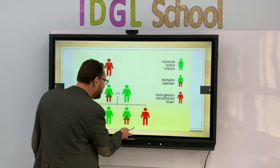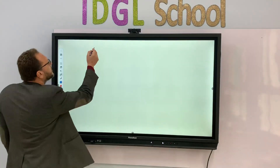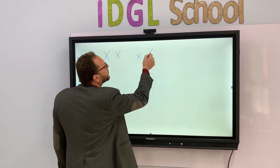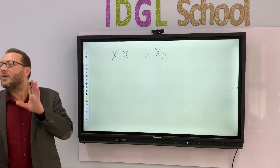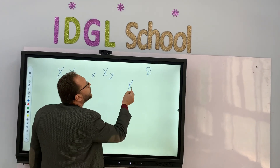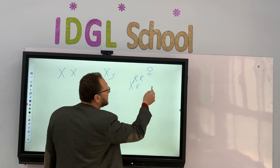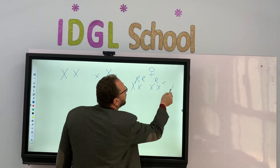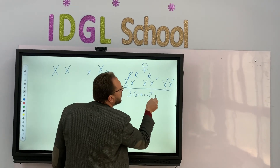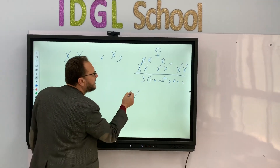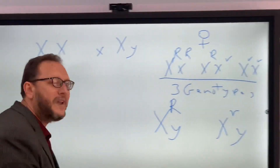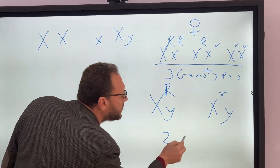The female for sex-linked traits has two X chromosomes, so the female carries two genes related to any sex-linked trait. While the male has only one X chromosome and one Y, the male has only one gene related to sex-linked traits. So any female could be pure dominant (X^R X^R), heterozygous dominant (X^R X^r), or recessive. So the female for sex-linked traits has three genotypes, while the male has two genotypes.